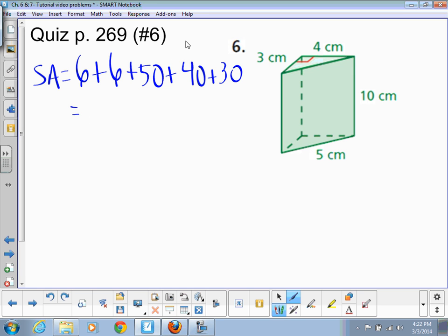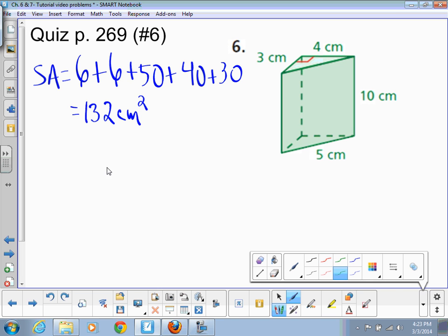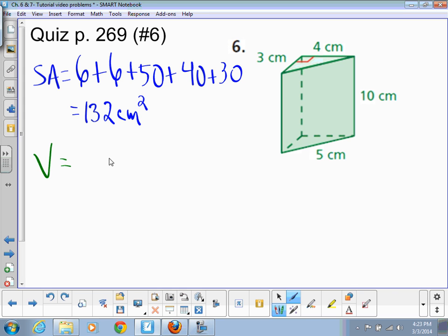So the surface area is all this added up. So 30 and 40 is 70, plus 50 is 120, plus 12. So our surface area is 132 centimeters squared. Now for the volume, the volume of a prism is area of the base (big B) times the height.